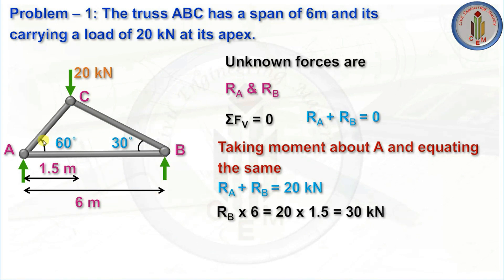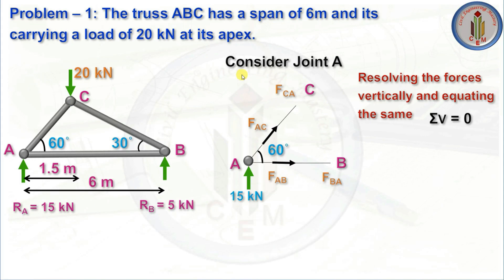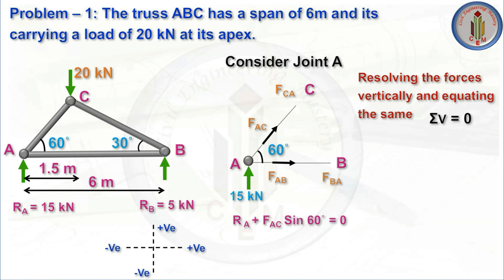Taking moments about A: RB × 6 = 20 × 1.5 = 30 kN·m, giving RB = 5 kN. From RA + RB = 20, we get RA = 15 kN. Now considering joint A, we resolve forces vertically and equate to zero. The vertical equilibrium gives: RA + FAC sin60 = 0. Here, FAC sin60 represents the vertical component of the inclined member force.